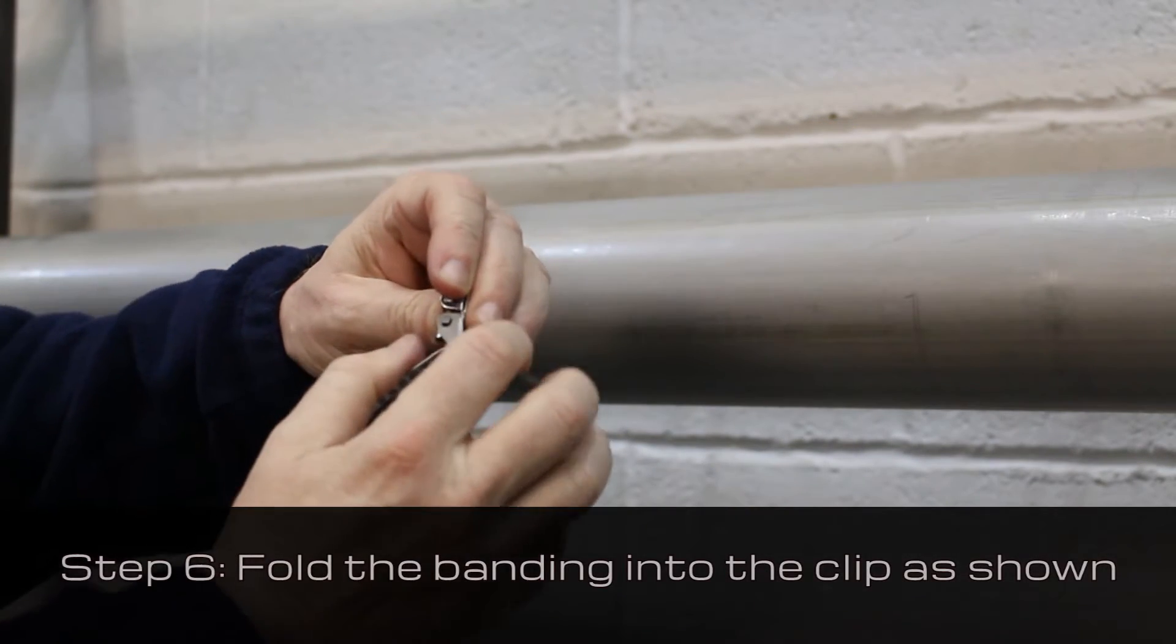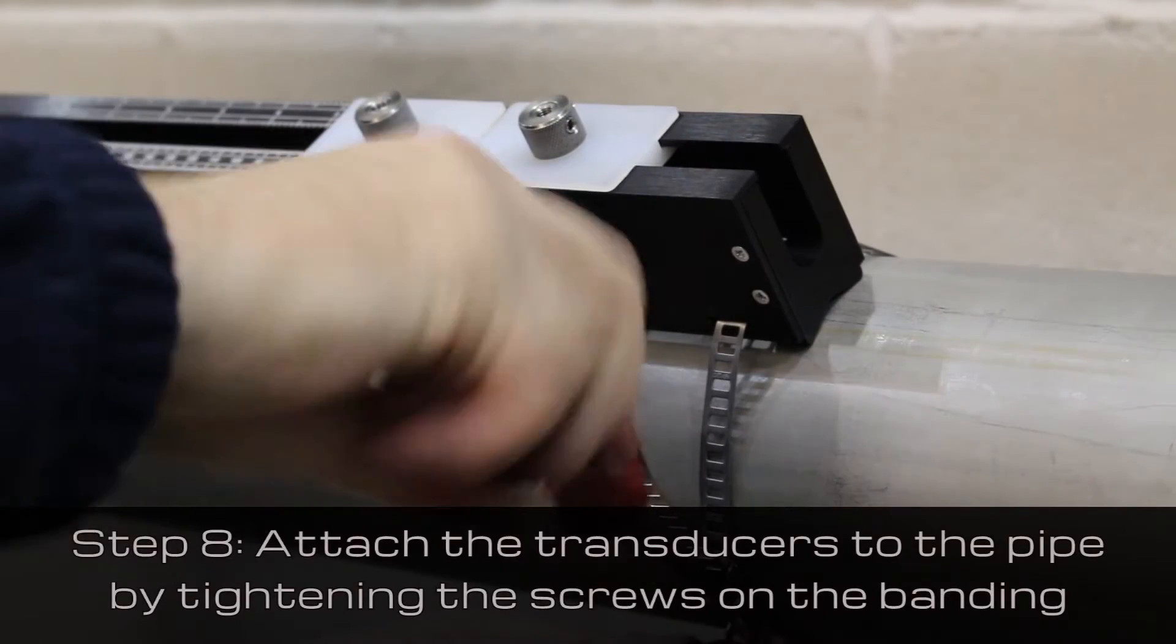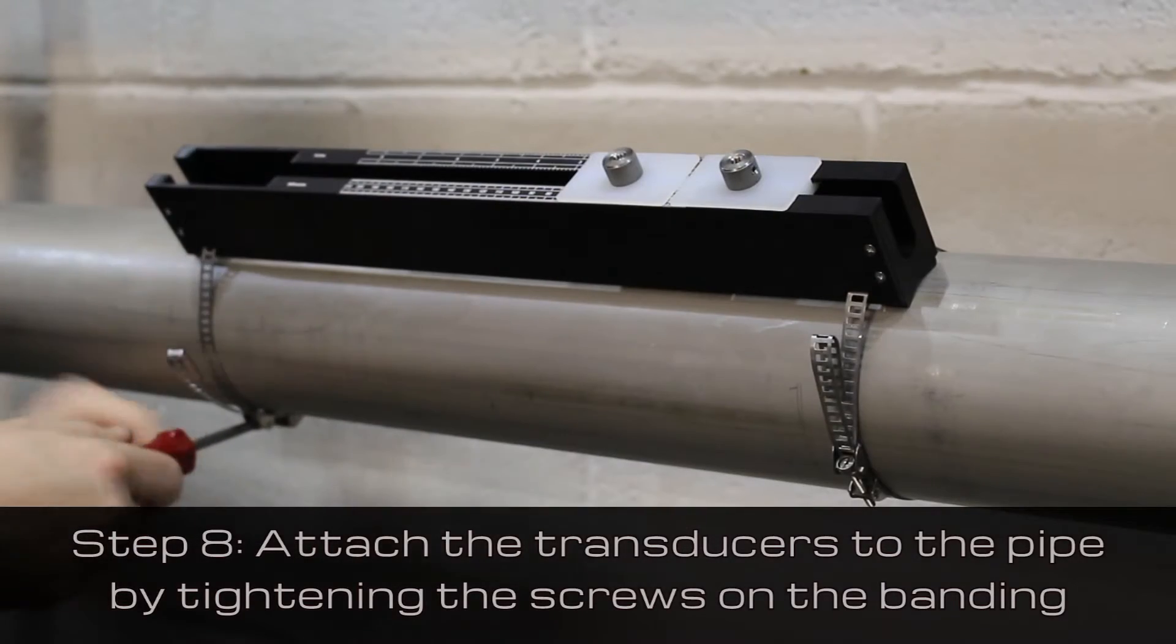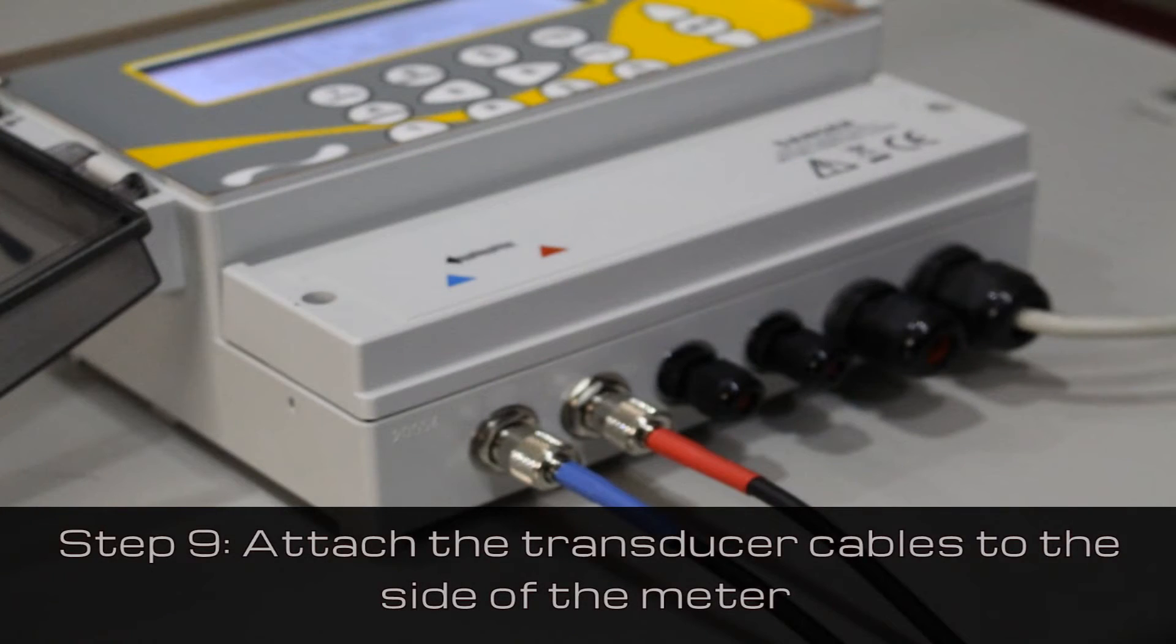Next, fold the banding into the clip as shown. Slot the banding through the slots in the guide rail. Then attach the transducers to the pipe by tightening the screws on the banding.